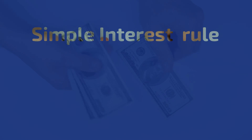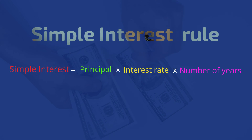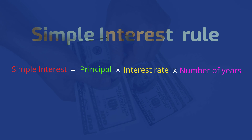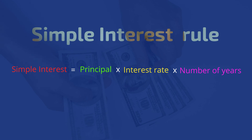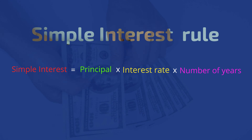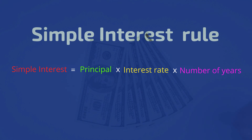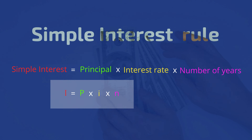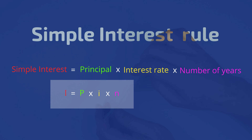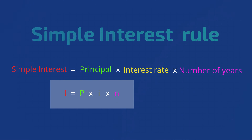Let's learn the simple interest rule. Simple interest equals the principal — that's the amount of money you borrow — multiplied by the interest rate as a percent, multiplied by the number of years of the loan. Big I, that's the interest, equals P, that's the principal, multiplied by small i, which is the interest rate, multiplied by n, the number of years of the loan. We call this the PIN rule.